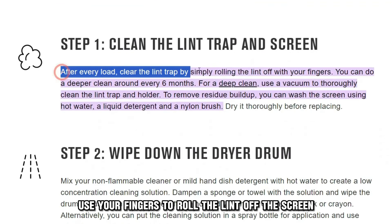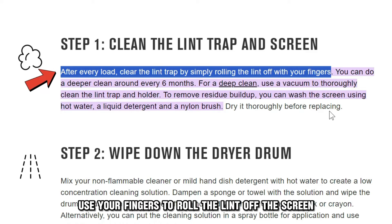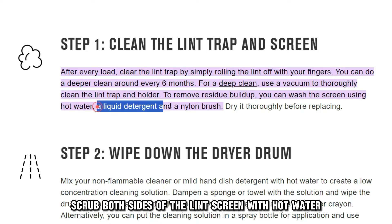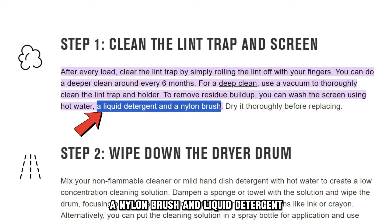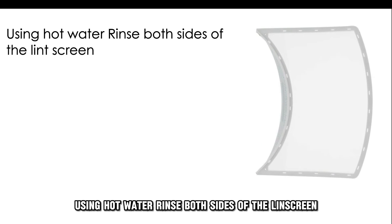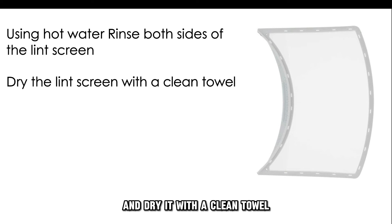Use your fingers to roll the lint off the screen. Using hot water, wet both sides of the lint screen. Scrub both sides of the lint screen with hot water, a nylon brush, and liquid detergent. Using hot water, rinse both sides of the lint screen and dry it with a clean towel.